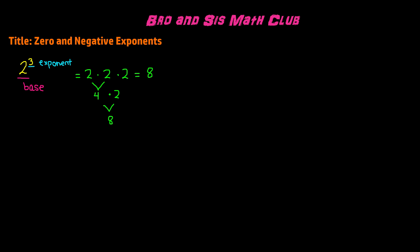Now let's say we have 2 to the power of 2. Using the same concept, 2 multiplied by itself twice — 2 times 2 gives us 4. Now let's say we have 2 to the power of 1. A property of exponents is that any number to the power of 1 is that number itself. So 2 to the power of 1 is 2. Even 1 million to the power of 1 would be 1 million.